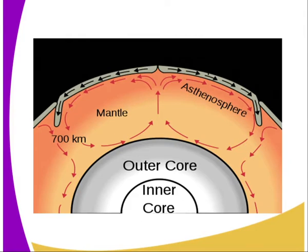For example, we have the asthenosphere and the lithosphere. You can see the layer that is just above the asthenosphere, or the mantle — that is the one we refer to as the plate, the tectonic plate. And when it is moving, we say that is the plate tectonic theory.